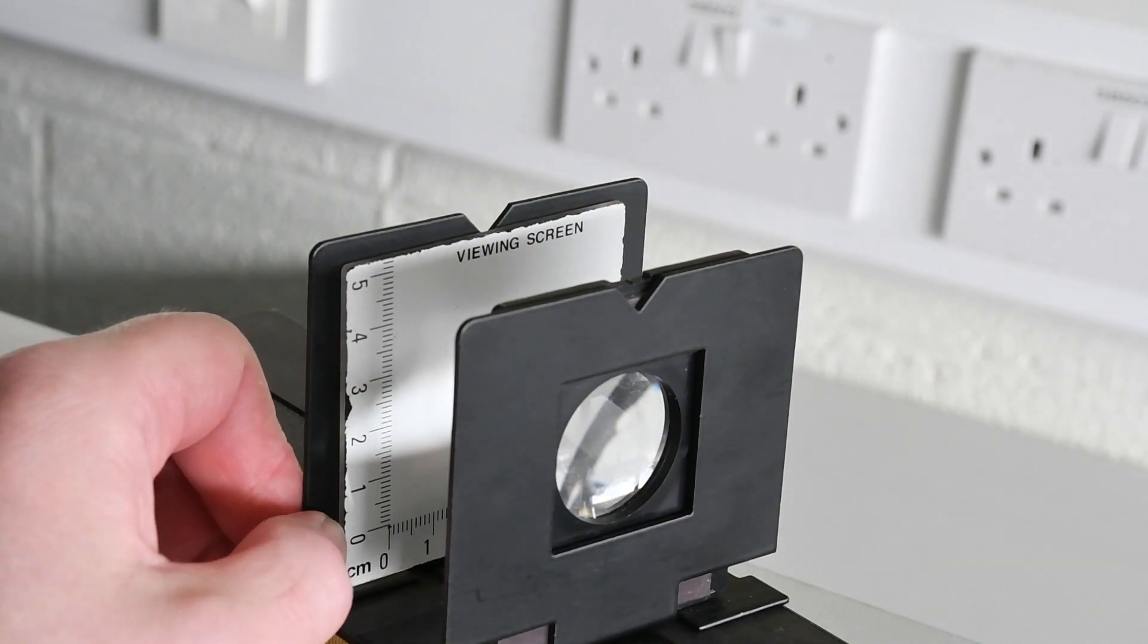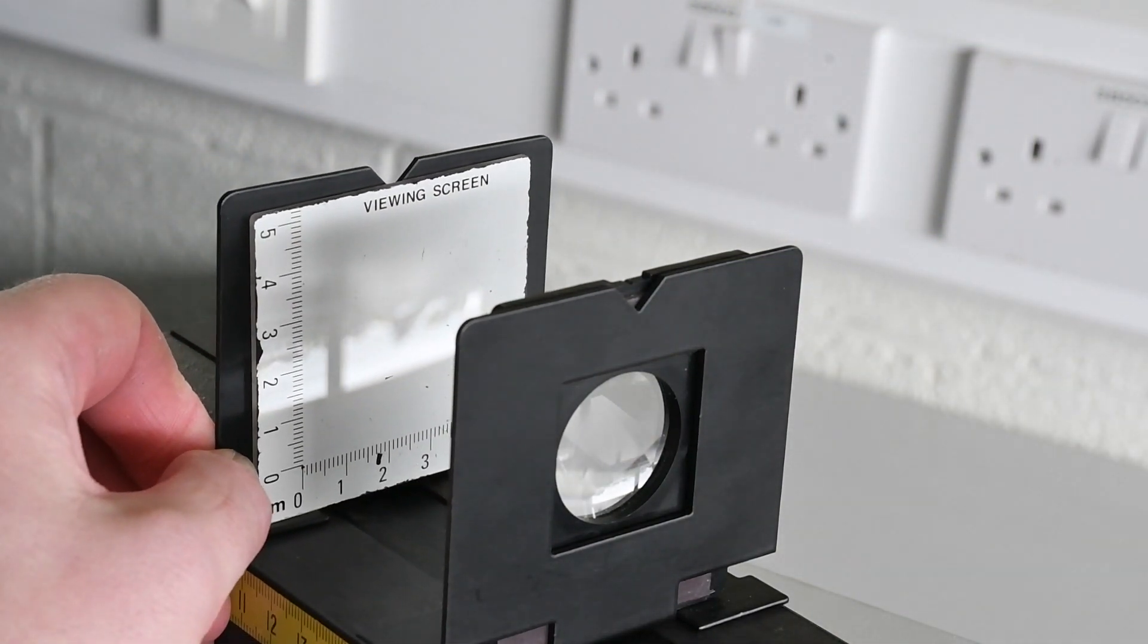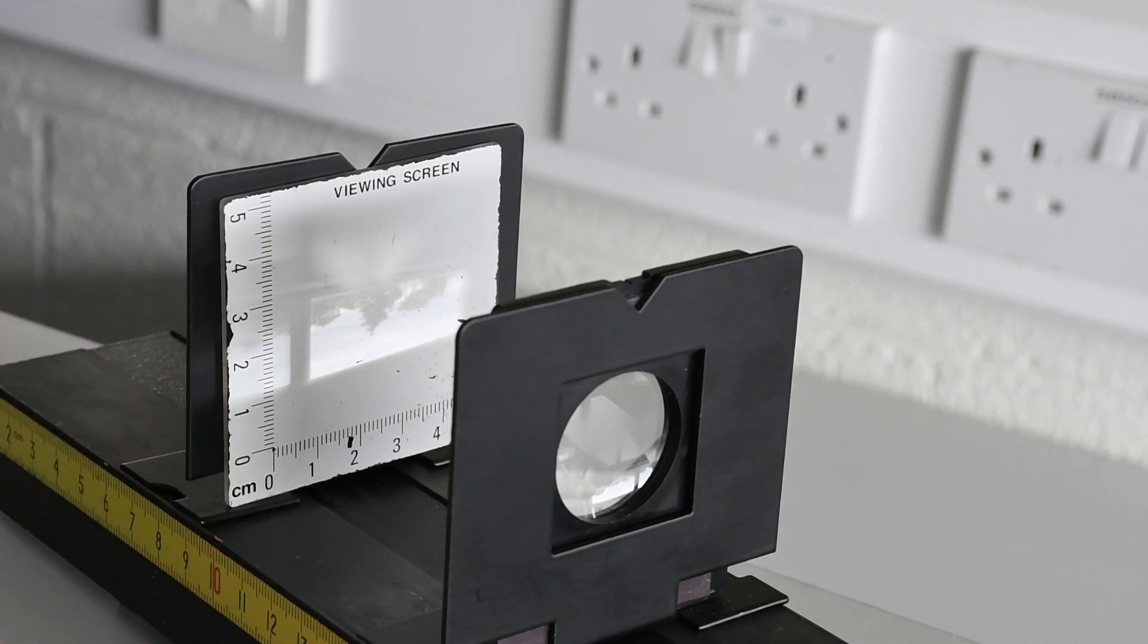If you don't have a diffuser screen, you can always use a viewing screen or a piece of paper to do the same experiment. As you can see, our image is again inverted.